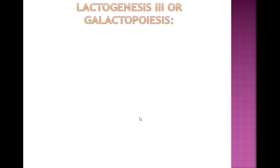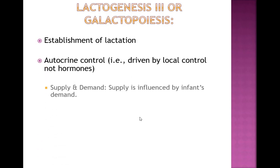Once the baby is born and the placenta delivered, the body will start making transitional milk and move into mature milk — the breasts will get full and milk will come in. But in order to get to lactogenesis 3 or galactopoiesis — the establishment of lactation — mom needs to be breastfeeding the baby frequently and the baby needs to be effectively breastfeeding and removing milk from the breast.